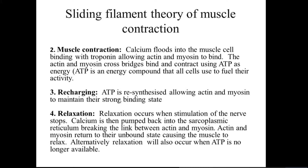The fourth and last step is relaxation. Relaxation occurs when stimulation of the nerve stops — when the nervous system stops sending a signal through motor neurons to the neuromuscular junction. Calcium is then pumped back into the sarcoplasmic reticulum, and with no calcium available to attach to troponin, troponin does not change its structure.